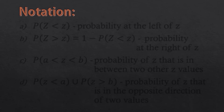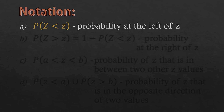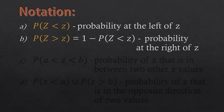We have different notations for our probabilities or percentiles, and these probabilities are the same as the percentiles. First, we have the notation P of Z less than a Z score, which means the probability at the left of Z. Second notation: P of Z greater than a Z score equals 1 minus P of Z less than that Z score. This means the probability at the right of Z.